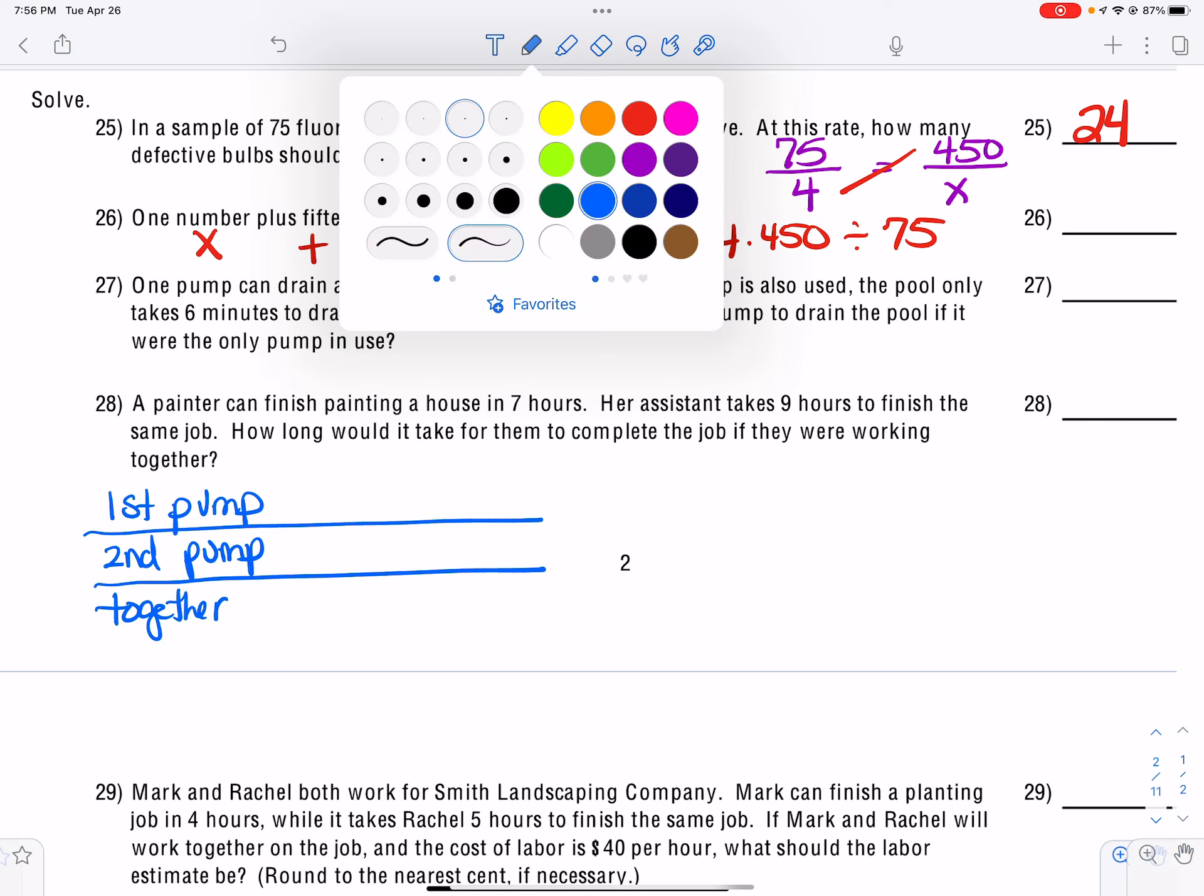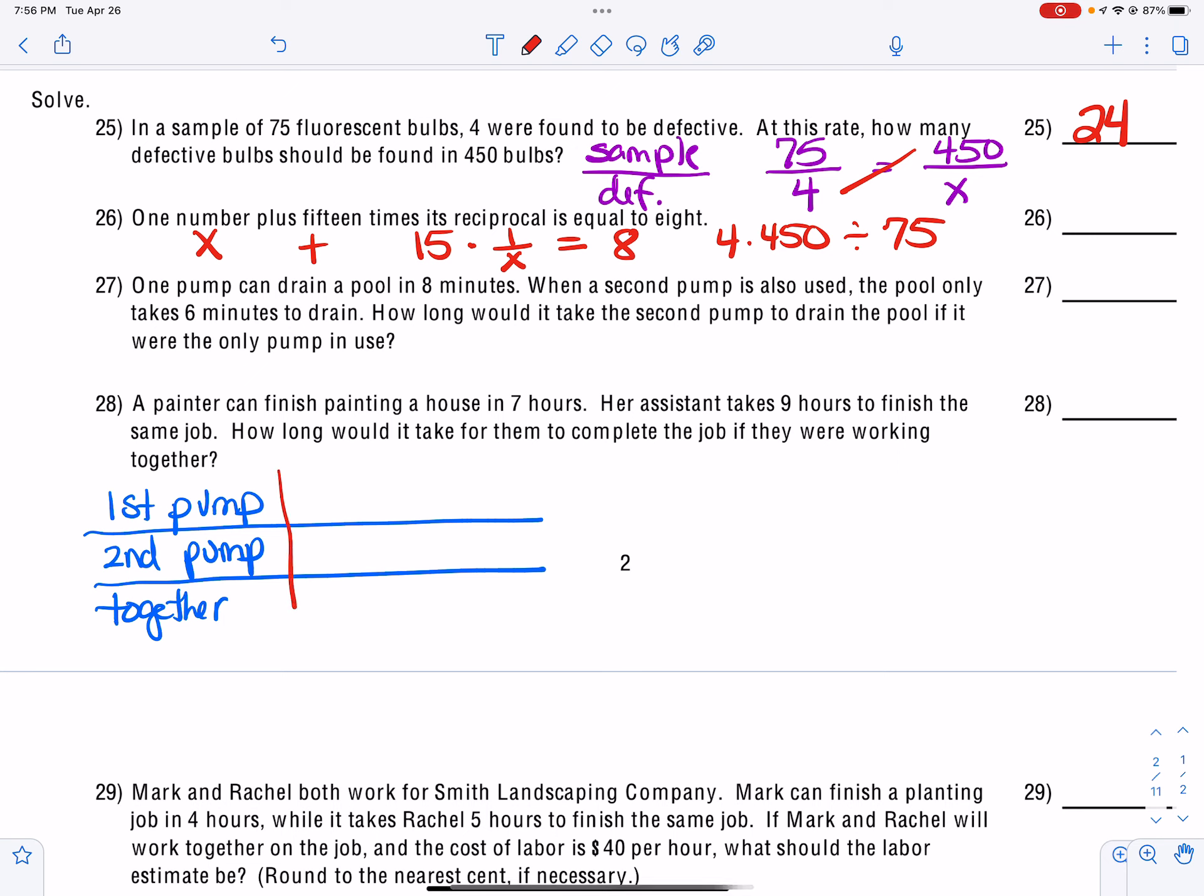It says that the first pump drains it in 8 minutes. The second pump is what we don't know. And together, it only takes them 6 minutes. So now we have to convert them to unit fractions by putting them underneath one. And then we can set up our equation. So the first pump plus the second pump has to equal the together time. And so now we're going to get rid of that denominator. And so we want the smallest number that 8 and 6 go into. And that would be 24.